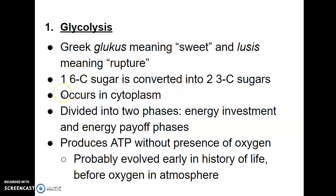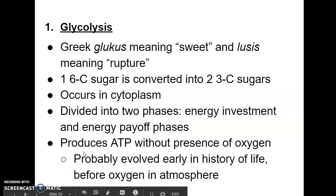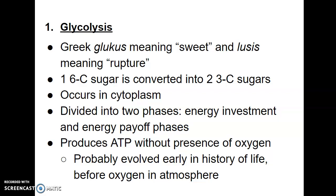In the process of glycolysis, we take one six-carbon sugar, which is glucose, and convert it into two three-carbon sugars, which are pyruvate or pyruvic acid. Glycolysis occurs in the cytoplasm and is divided into two phases: energy investment and energy payoff phases. That means we have to use ATP but we also generate ATP. Glycolysis can produce ATP without the presence of oxygen, so it's an anaerobic metabolic process, which signifies that it probably evolved early in the history of life before oxygen in the atmosphere was present.